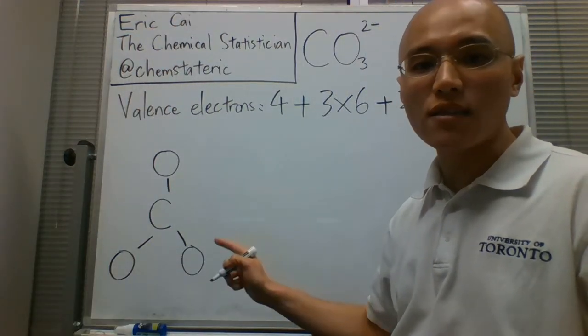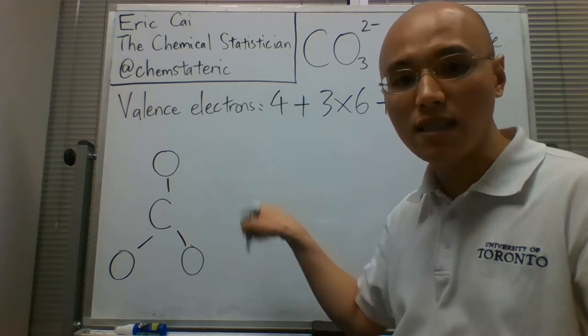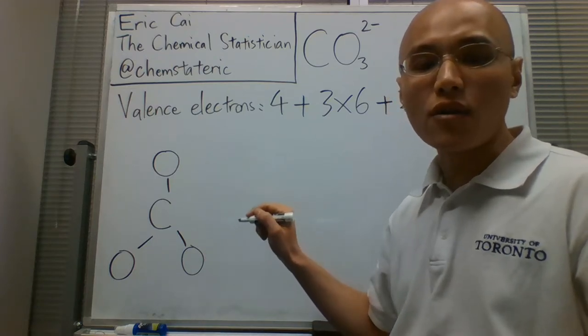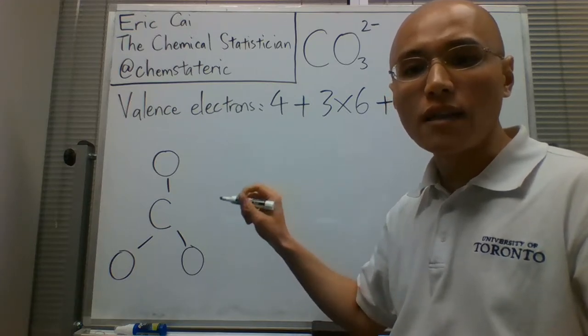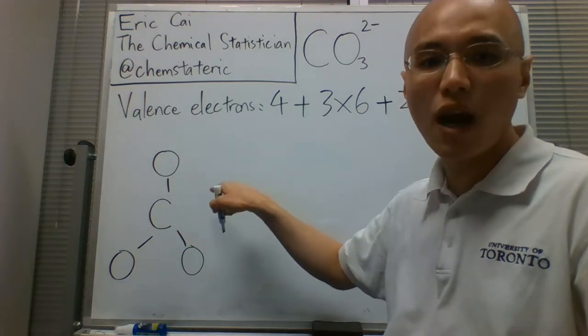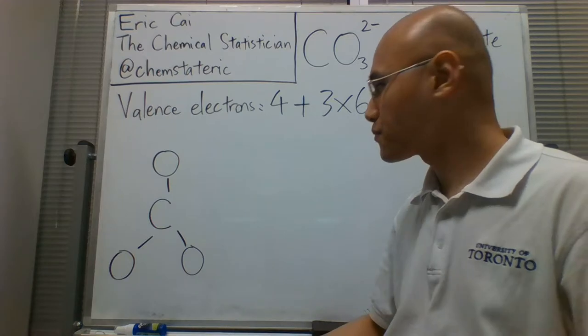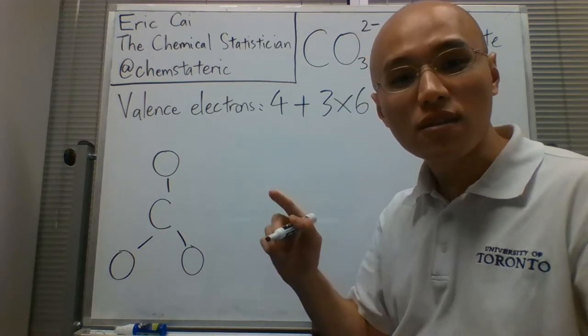That uses six of the 24 electrons. So we need to distribute the other 18, and at this point, it's a good assumption that those 18 electrons are spread evenly between those three oxygens on the periphery. That's not always true, but it's a good starting point.